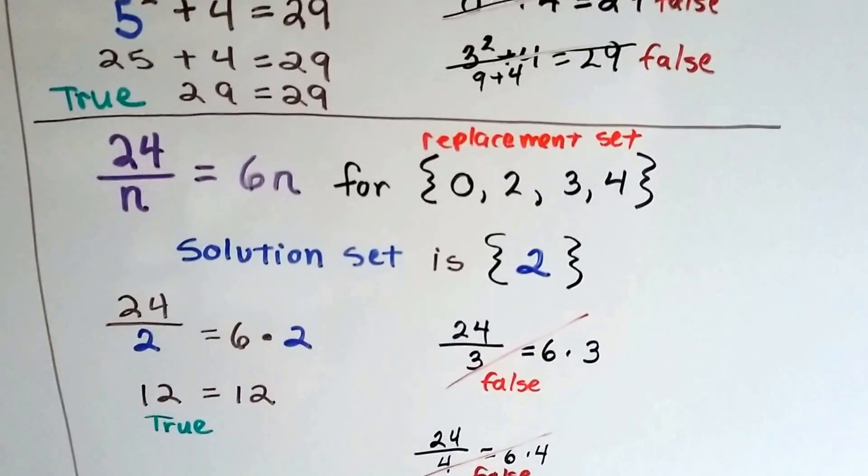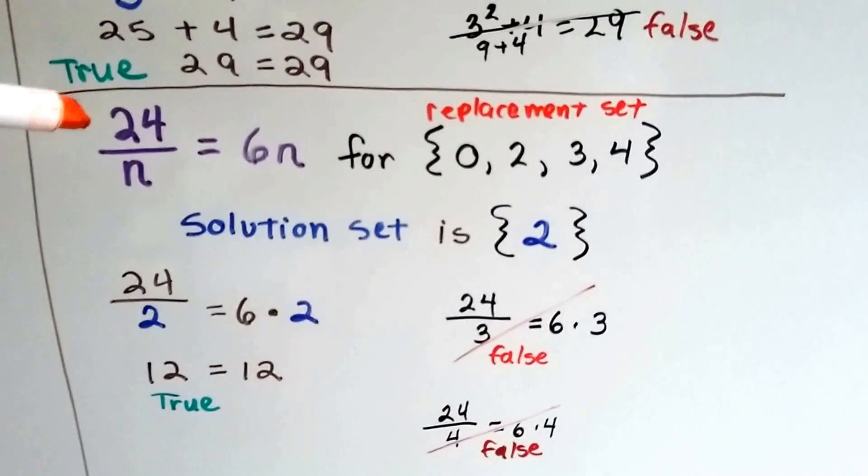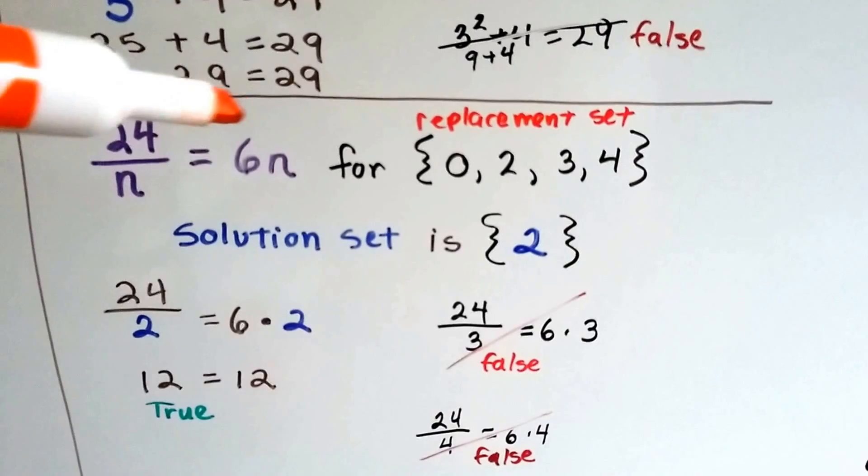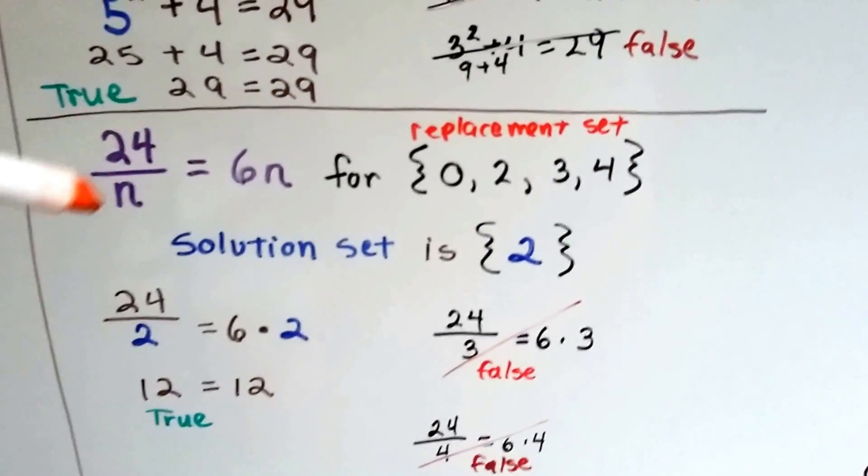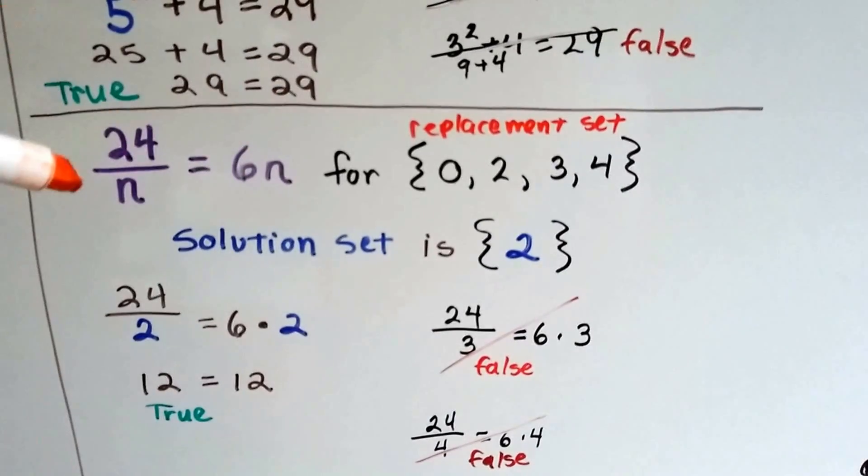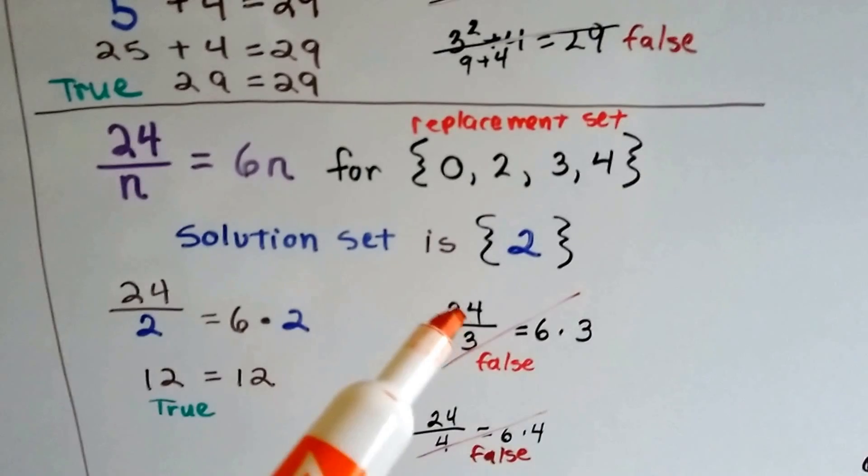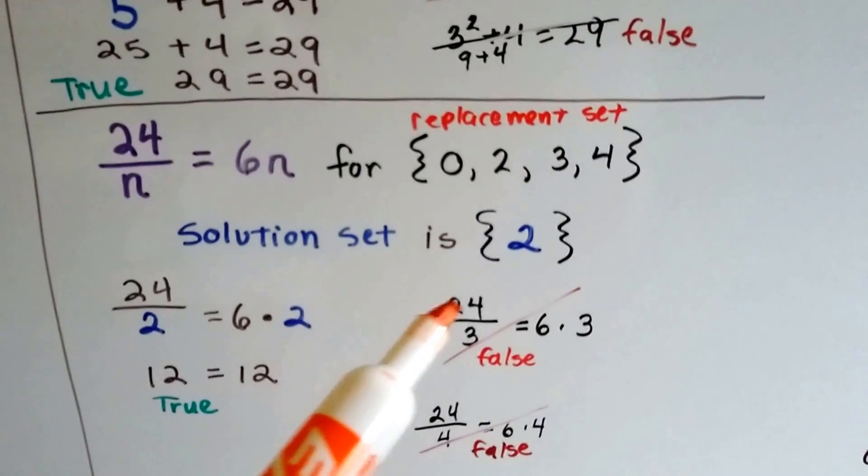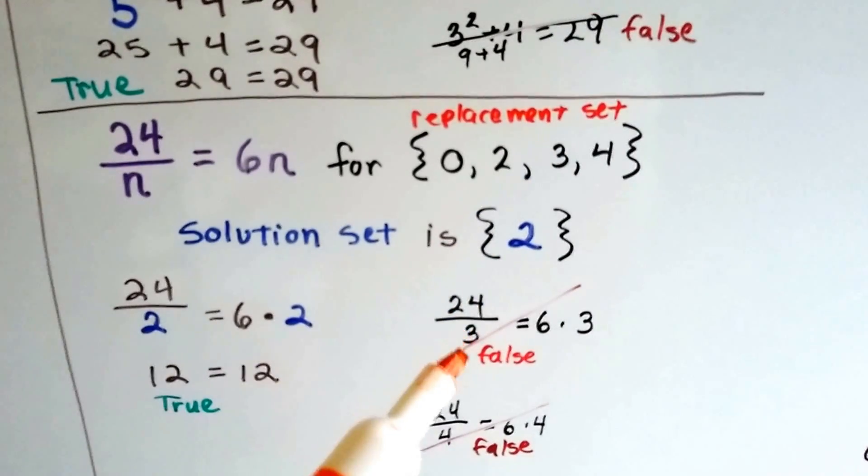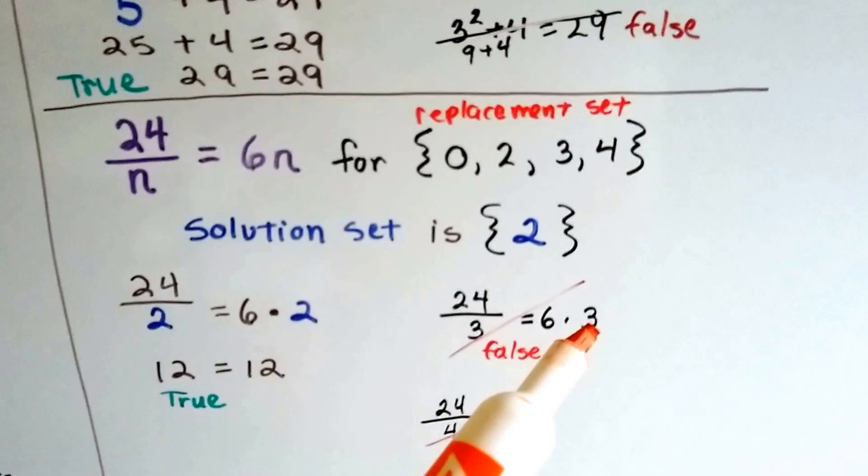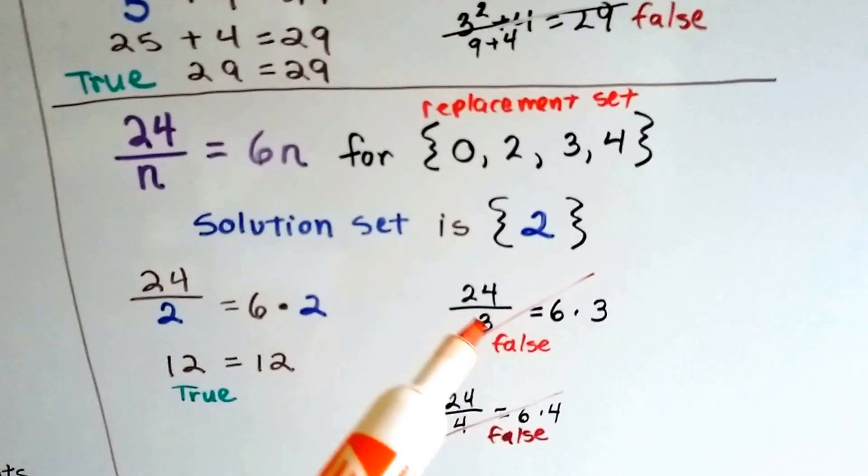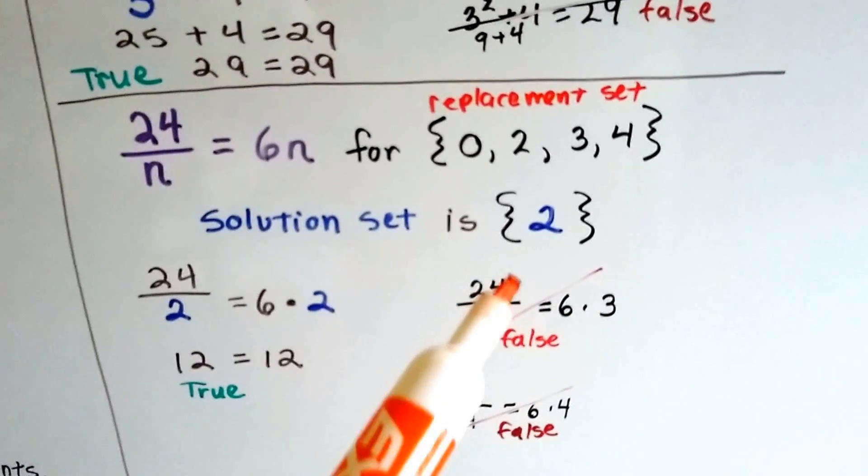Let's try it again. We've got 24 divided by n equals 6n. So n has to be the same number on both sides of the equal sign. Well, if we try putting in 3, 24 divided by 3 is 8. And 6 times 3 is 18. So that's not true. 8 doesn't equal 18. That's false. So it's not 3.